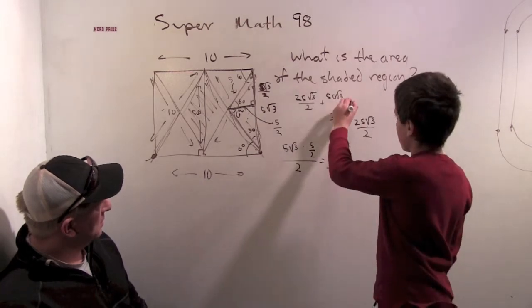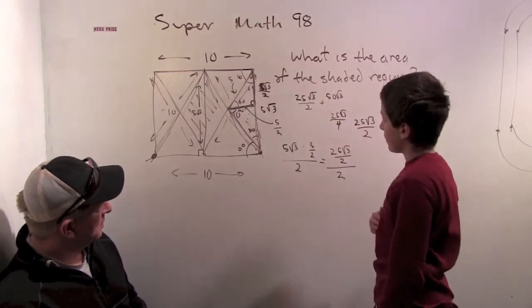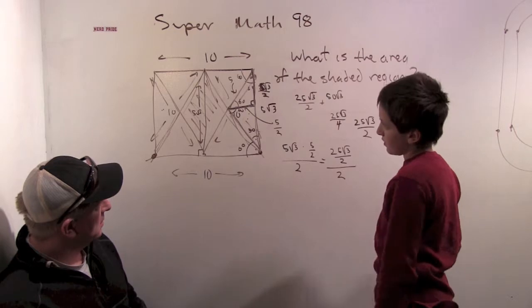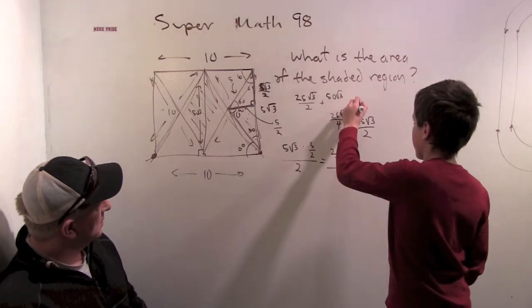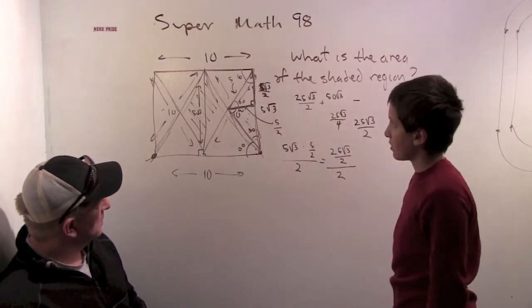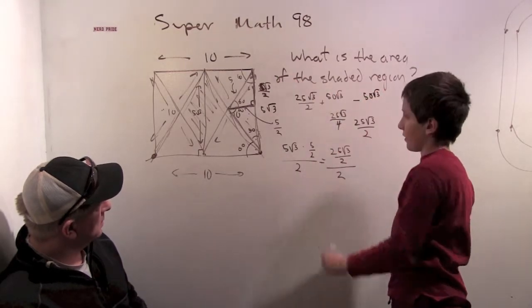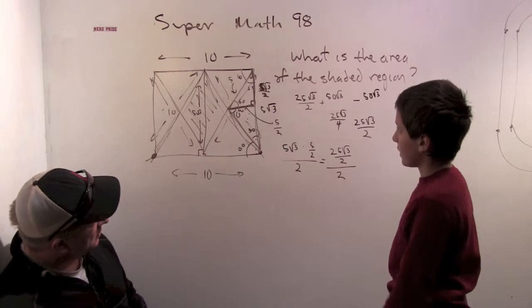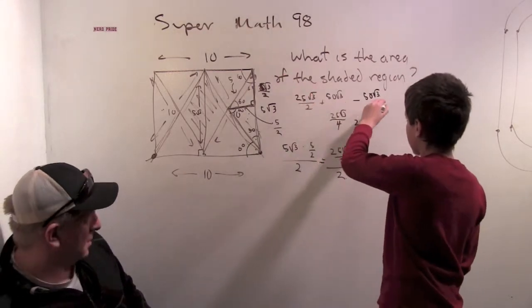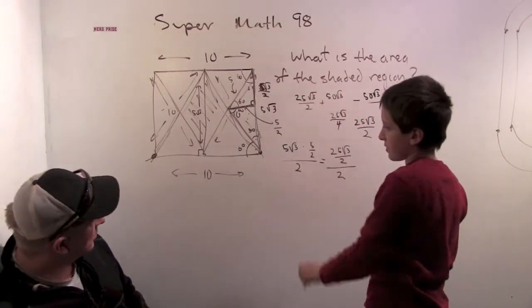And then we have to subtract... minus 50 root 3. What's the 50 root 3? I'm subtracting the area of the rectangle from this.